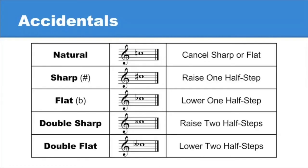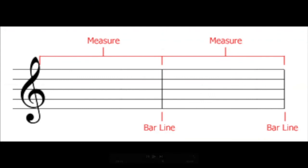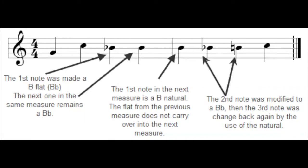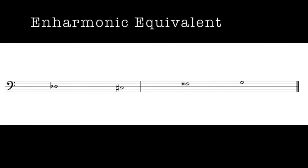To recap what we've learned in this lecture: a natural cancels any sharp or flat, a sharp raises a note by one half step, a flat lowers a note by a half step, a double sharp raises a note by two half steps, and double flats lower notes by two half steps. Music is notated using measures or bars, and these measures are separated with the use of a bar line. Accidentals affect all of the notes on the same line or space until the end of the measure. A bar line cancels any accidentals from the previous measure. A natural cancels any previous accidentals, returning a pitch to its natural level. And last but not least, the term enharmonic equivalent refers to a pitch that is notated differently but sounds the same as another pitch.